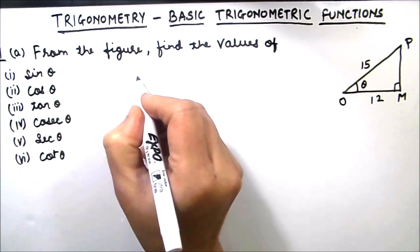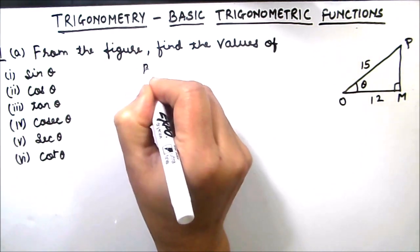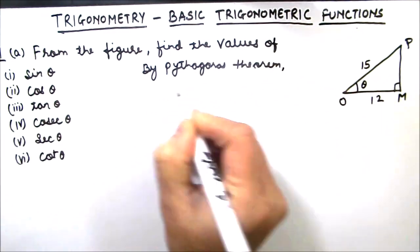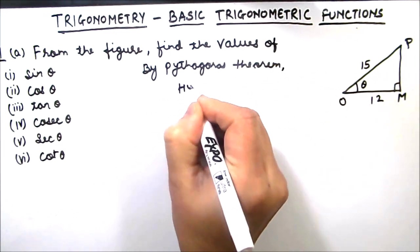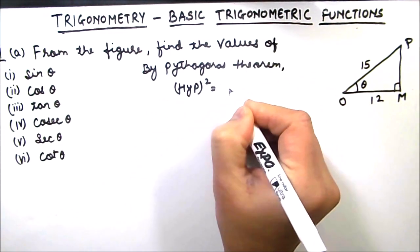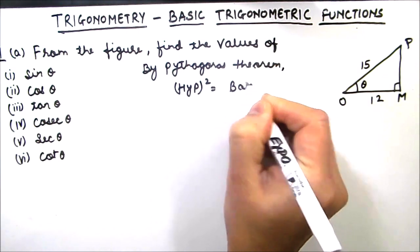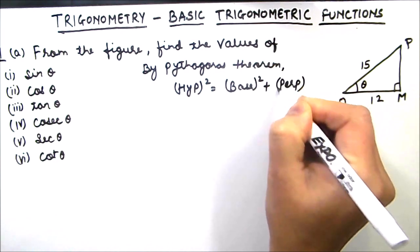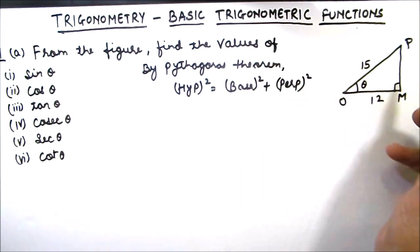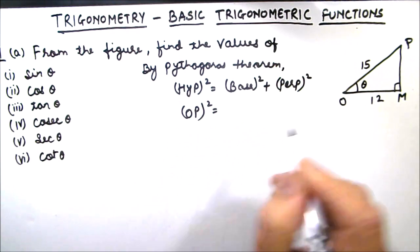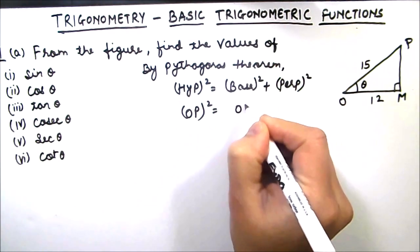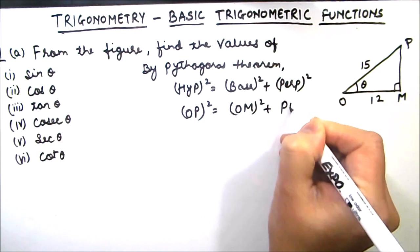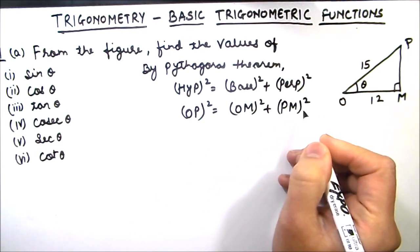So here we are going to use the Pythagorean theorem. By Pythagoras theorem, hypotenuse squared is equal to base squared plus perpendicular squared. In this triangle OPM, hypotenuse is OP, base is OM, and perpendicular is PM. We need to find the length of PM.